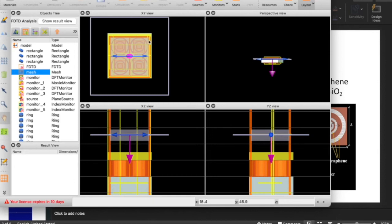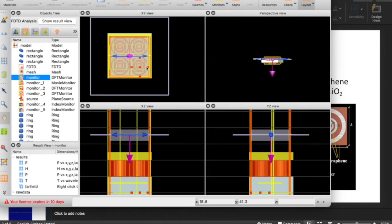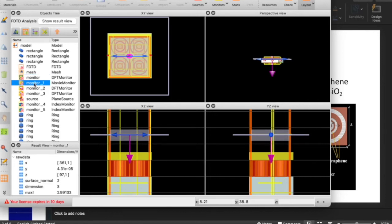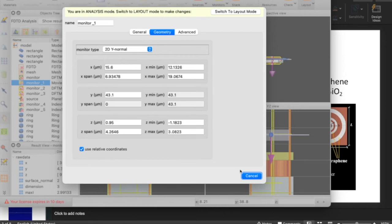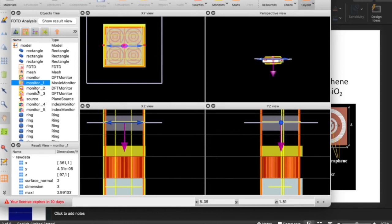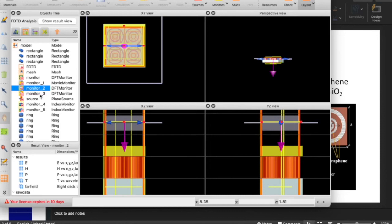Four times three, twelve rings. We have a profile monitor acting on this, the movie monitor to record what happens. This monitor is in the 2D y normal. We also have other DFT monitors to capture the electric fields and the magnetic fields.